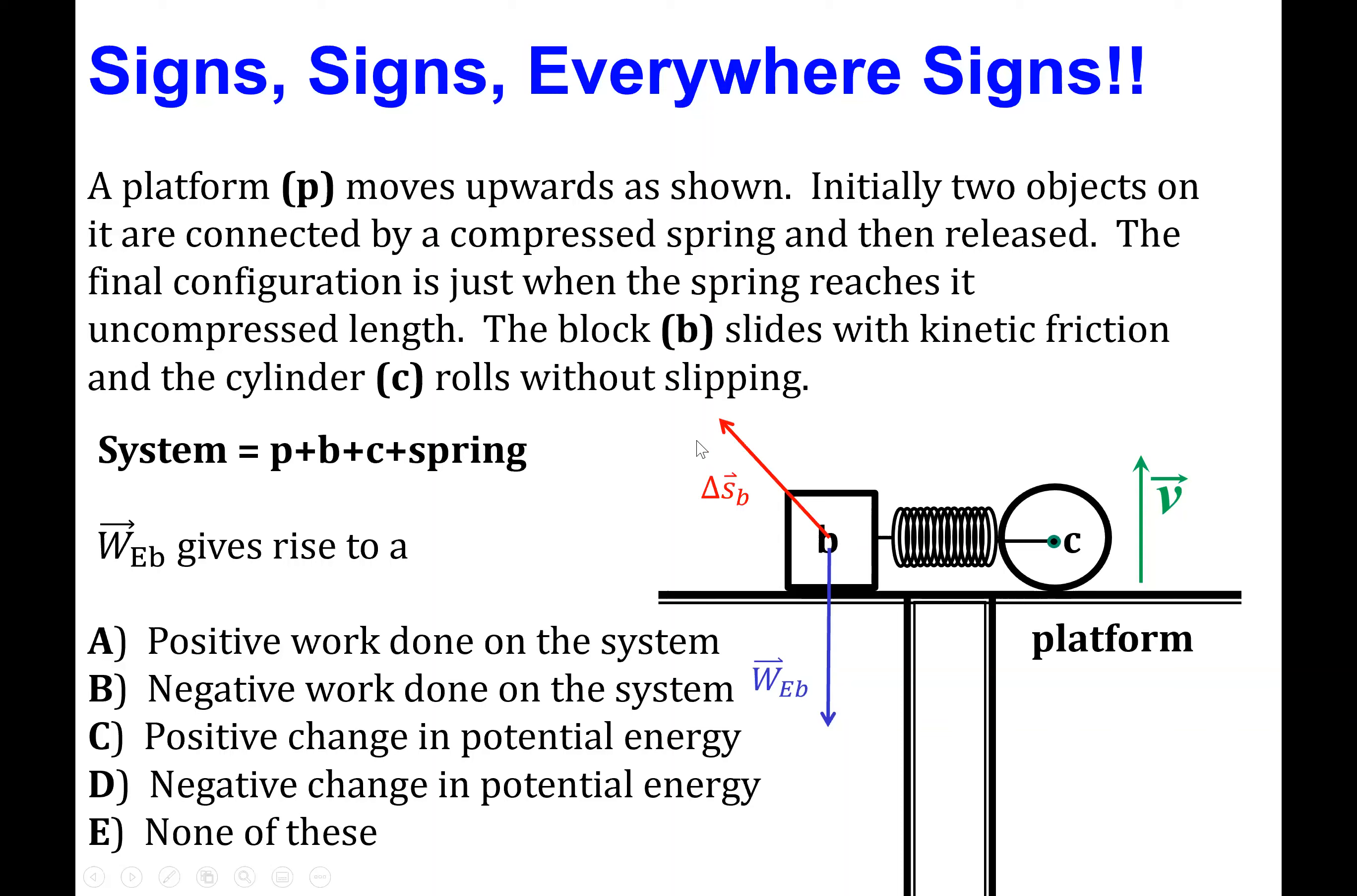So, we can ask the same question as we did before and think about what the dot product is between the weight vector and the displacement vector. And we can clearly see that the cosine of the angle between them is going to be a negative number, simply because the angle between these two vectors is greater than 90 degrees. And that'll be true for every single point along this path.